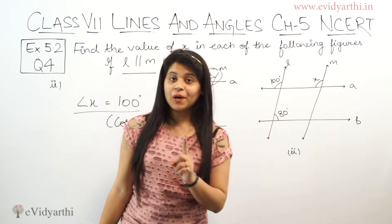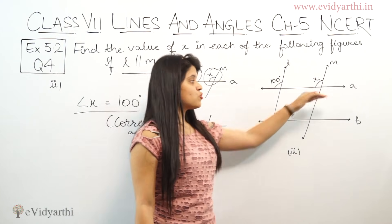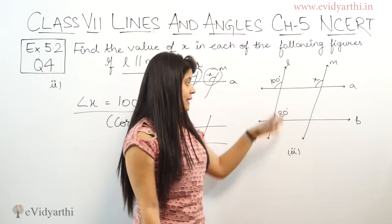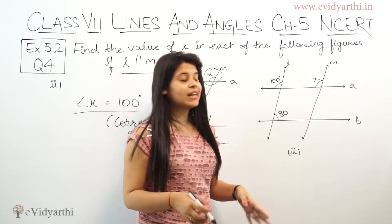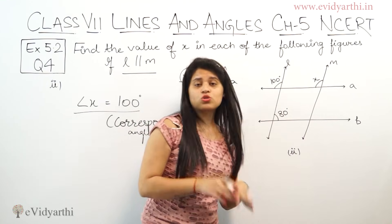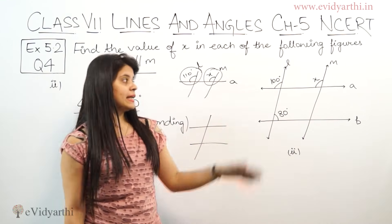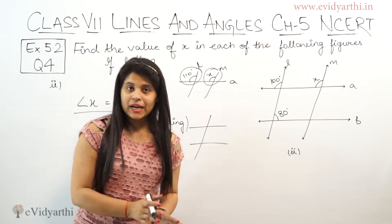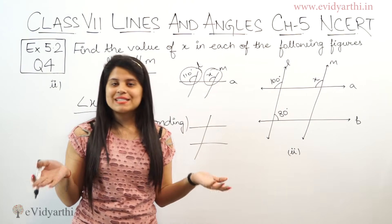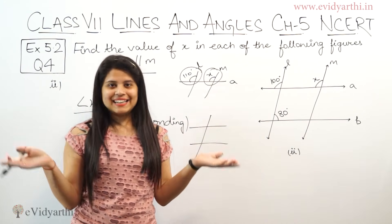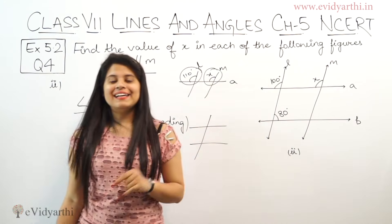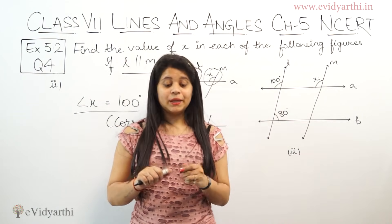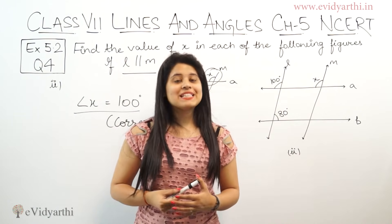Angle x equals 100 degrees — this is only one step. If you are confused that A and B are parallel and this is a transversal, the 80 degrees is just to confuse you. You can see which are the parallel lines and the transversal, and which angle you can use. So angle x equals 100 degrees. That was question number 4.